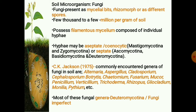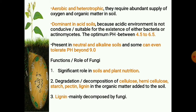Most of these fungal genera belong to the subdivision Deuteromycotina or Fungi Imperfecti, which lacks the sexual mode of reproduction. As soil fungi are aerobic and heterotrophic, they require an abundant supply of oxygen and organic matter. In soil, fungi are dominant in acid soils because the acidic environment is non-conducive or unsuitable for the existence of either bacteria or actinomycetes. The optimum pH for fungi lies between 4.5 to 6.5, though they are also present in neutral and alkaline soils, and some can even tolerate pH beyond 9.